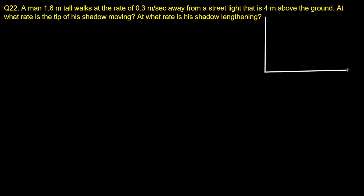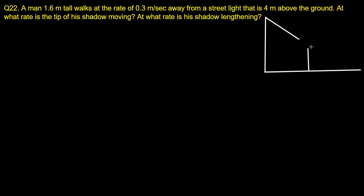Let's understand this with the help of a diagram. There is a lamppost and this is the ground level. At any moment the man would be somewhere here walking. The shadow will fall somewhere here. We want to understand how fast the tip of the shadow is moving and how fast the shadow is lengthening.